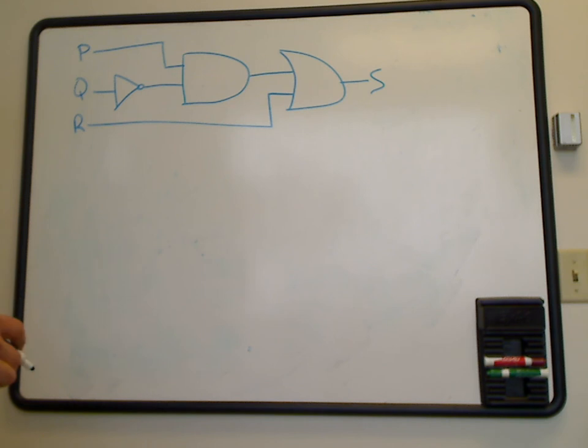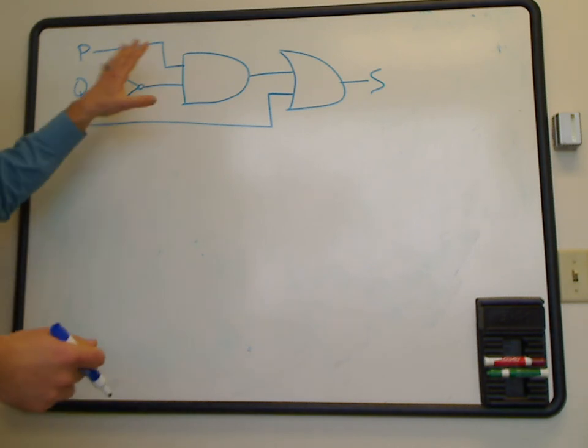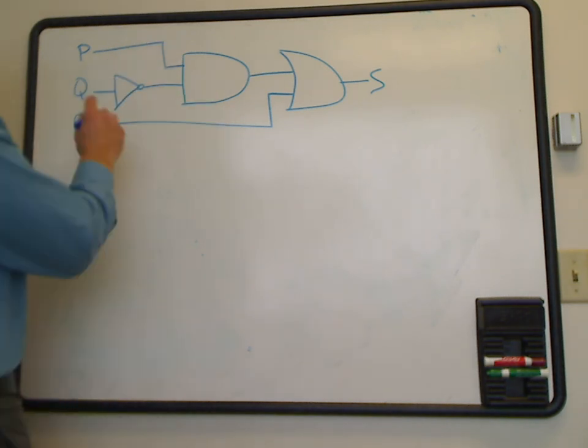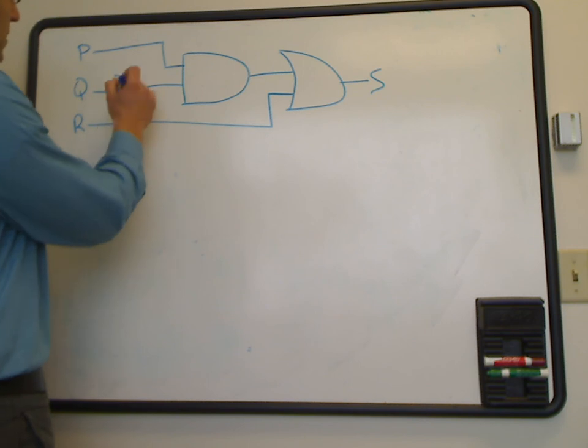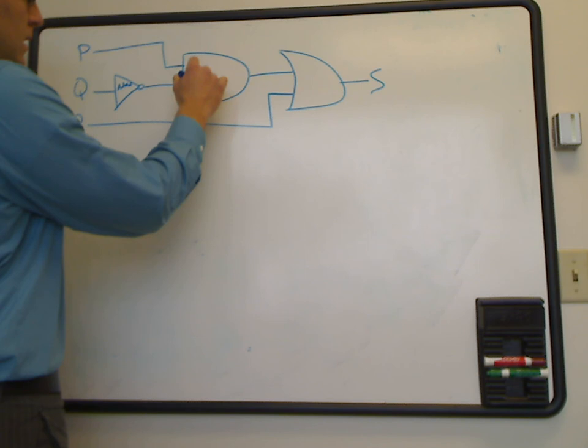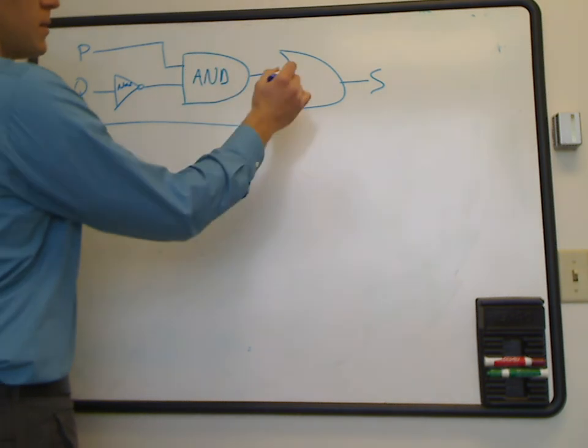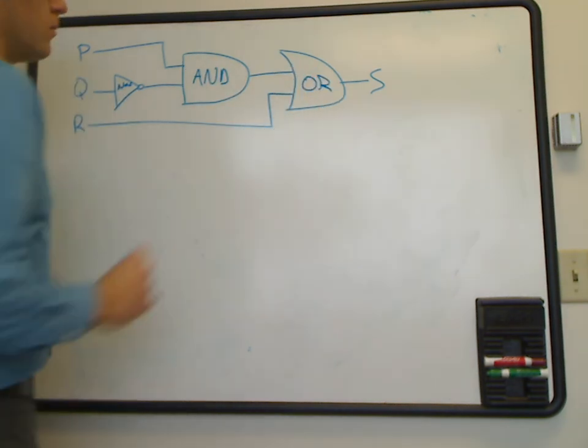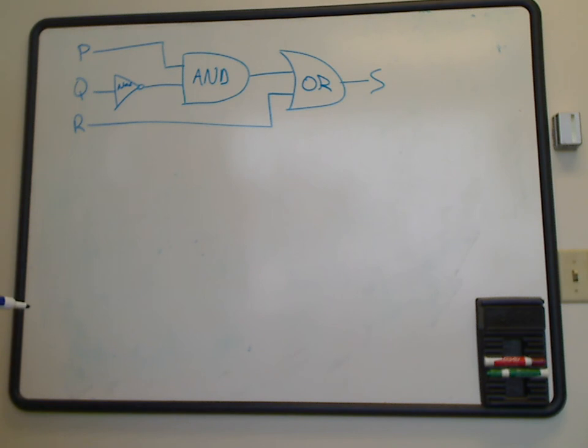So the way I like to do this is I like to make notes within the circuit here. So I know we have a symbol here that's a NOT, we have our symbol here is an AND, and our symbol here is an OR. So we'll just write those on there to make it clear.